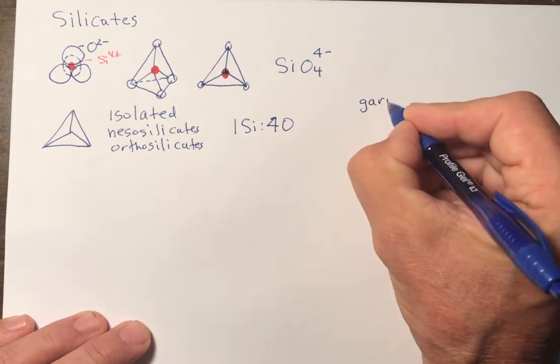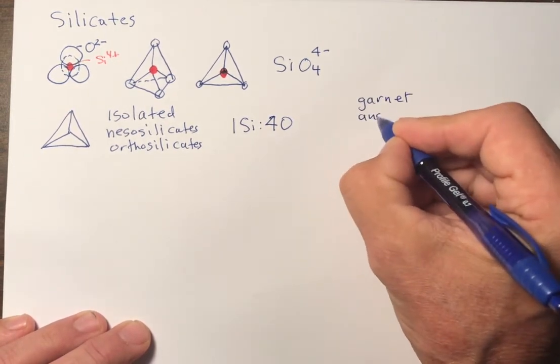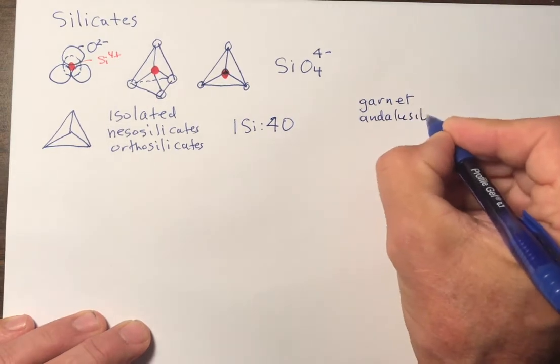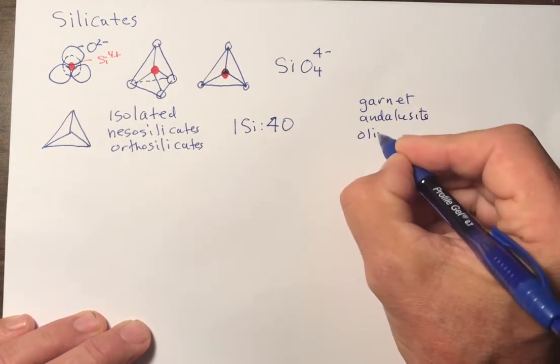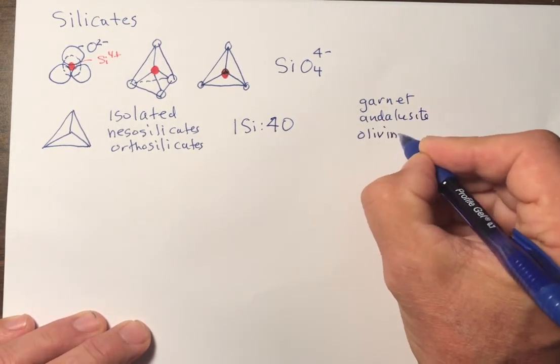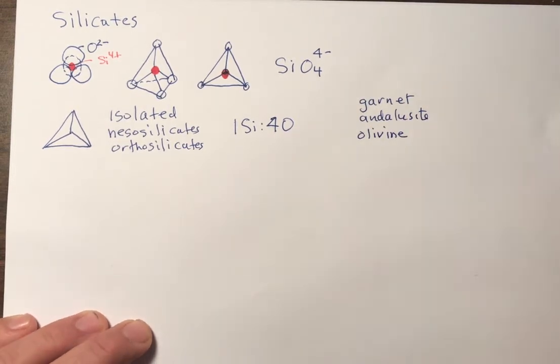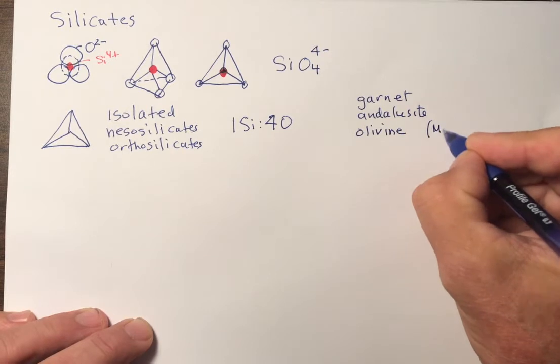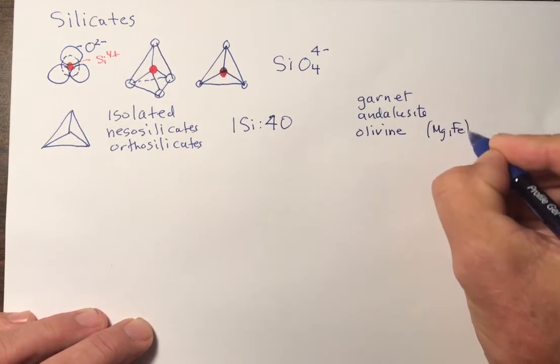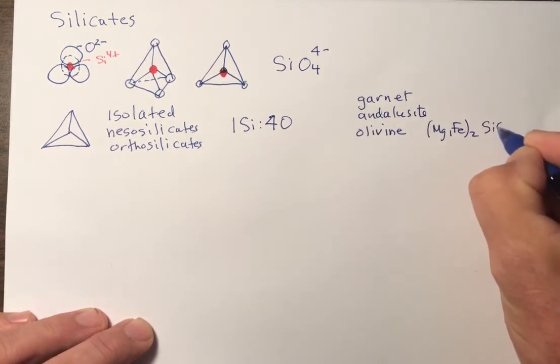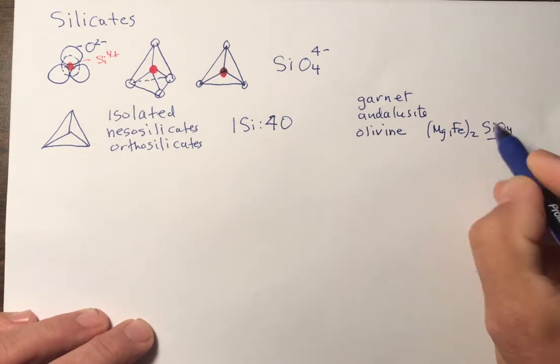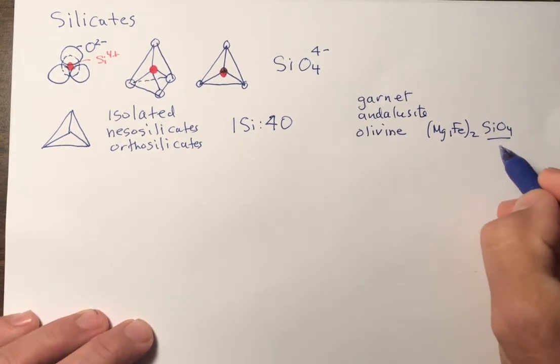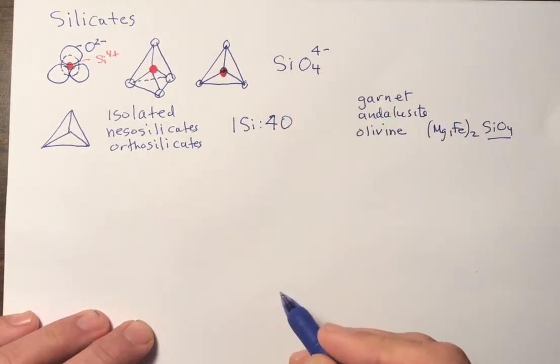And they include many of the most common minerals: garnet, aluminosilicates like andalusite, and olivine. Olivine is the most common mineral in the upper mantle, and it is written as (Mg,Fe)2SiO4. And note, the SiO4 stoichiometry is written out explicitly in the formula.